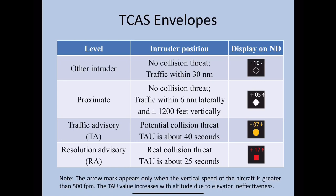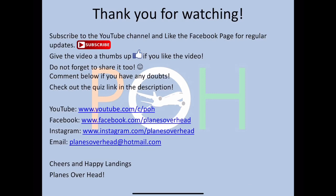The tau value increases with altitude due to elevator ineffectiveness. The 40-second and 25-second values are generally applicable around 10,000 to 20,000 feet. As you go higher, the tau value changes — for RA it may become 30 or 35 seconds — because the system gives you more reaction time. This is because at high altitude the elevator is less effective due to lower air density.